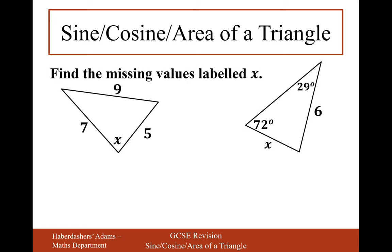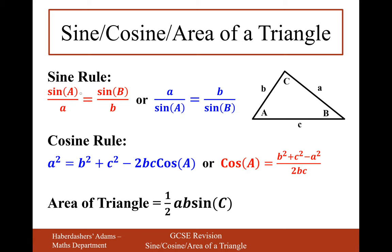Let's jump straight into a question. Pause the video and have a go at finding the missing value labelled X. On the first one on the left-hand side, we have all three sides and only one angle. Going back to the formulas: the sine rule works with two angles and two sides, so it's not the sine rule here. The cosine rule has all three sides and one angle — so it must be the cosine rule. Since I'm finding a missing angle, I'll use the rearranged cosine formula.